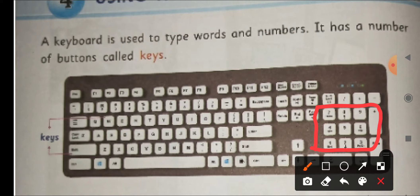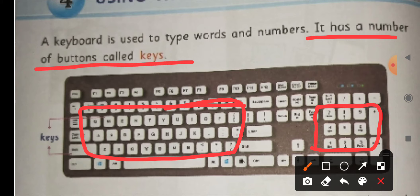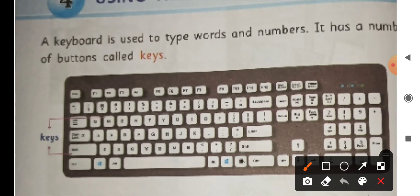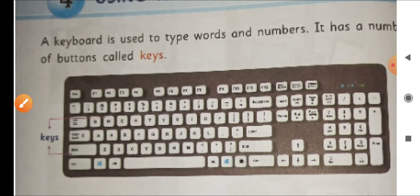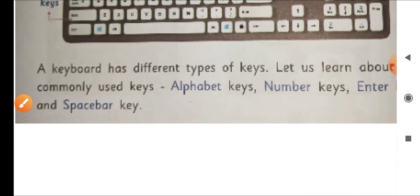So we can type numbers from here. And here you can see some alphabets are there. By this keys we can type the words. It has a number of buttons called keys. Individually, these all buttons are called keys. Whatever this one in the keyboard you are able to see, these are called keys.